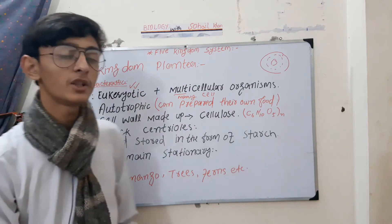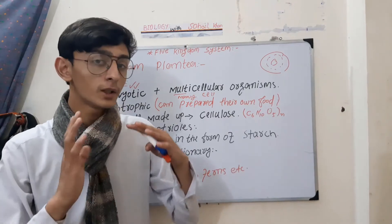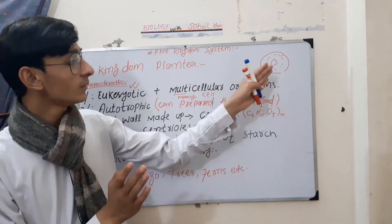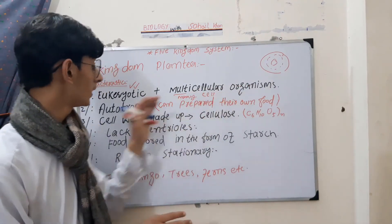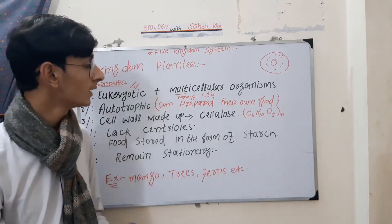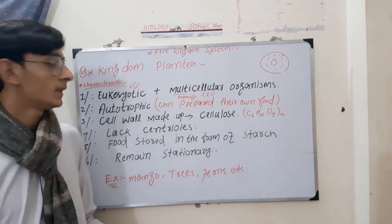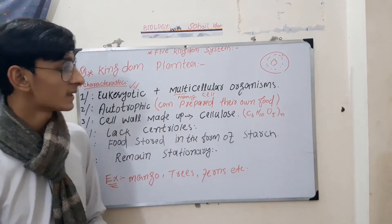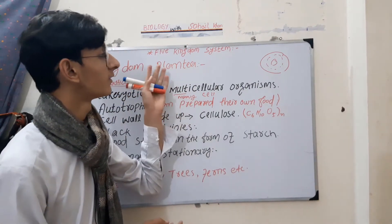Eukaryotic means the cell has a true nucleus with a membrane. Multicellular means their cells are many joined together. They are autotrophic, which means they can make their own food.